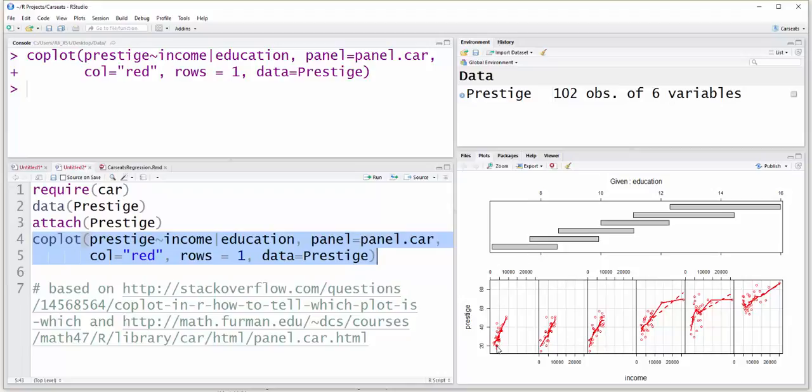So at low levels of education, prestige really goes up as you get more income.